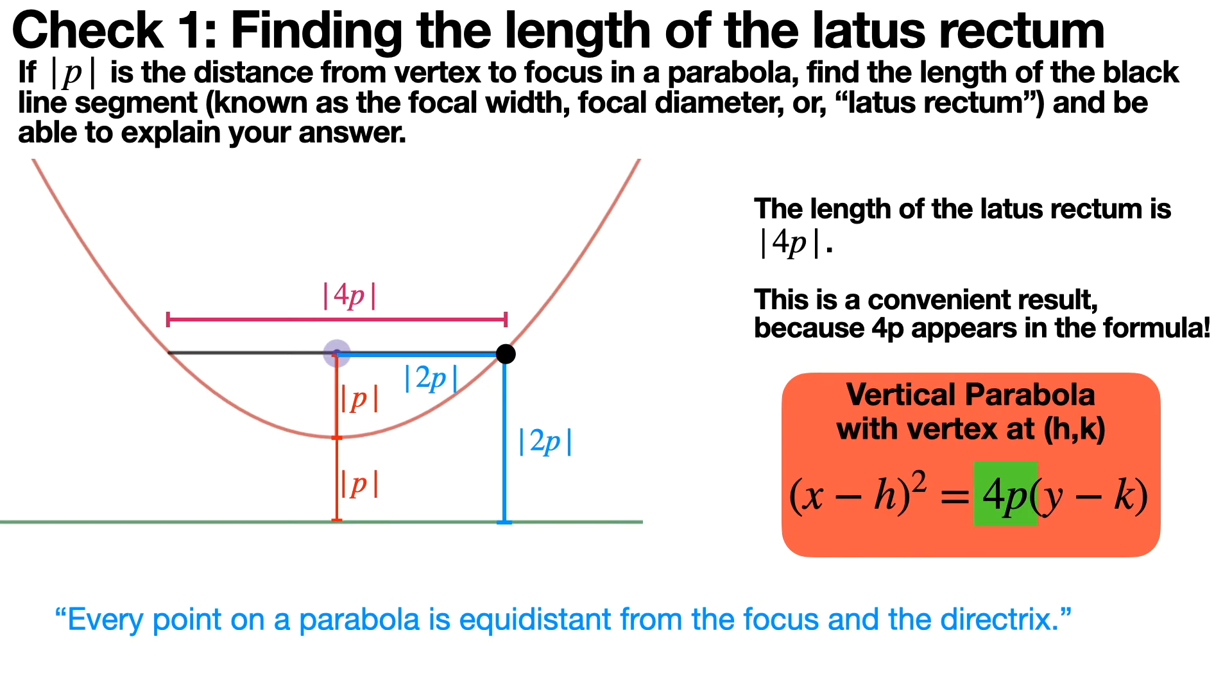So the length of the latus rectum is always going to be the absolute value of 4p, and this is a very convenient result because 4p appears in the formula. And so you see it right there in the formula for a vertical parabola and for a horizontal parabola, there's always a 4p directly in the formula.